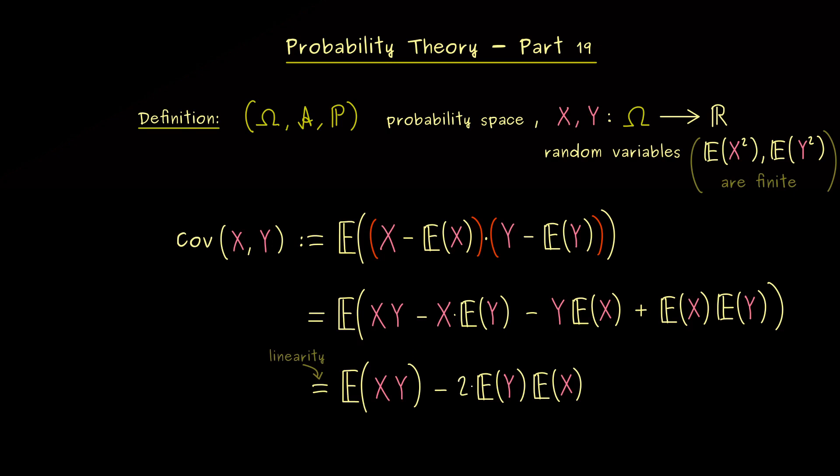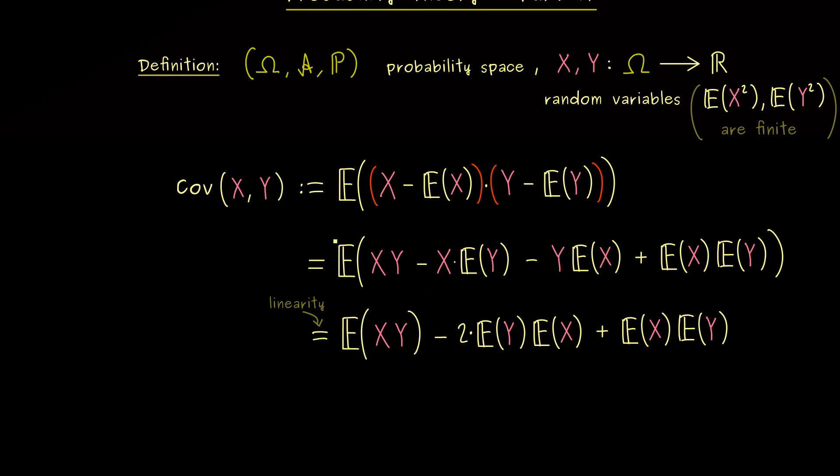And in addition, the last term is just a constant that will not change under the expectation. However, now you see, we can put both terms together, and we get a very nice short formula for the covariance.